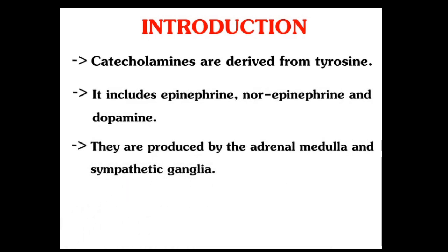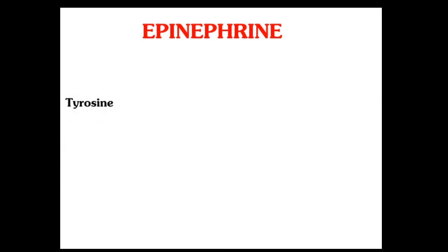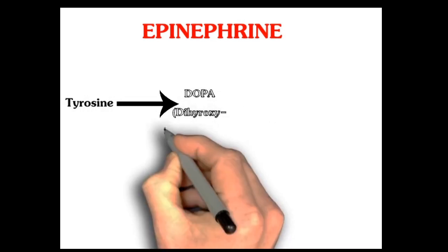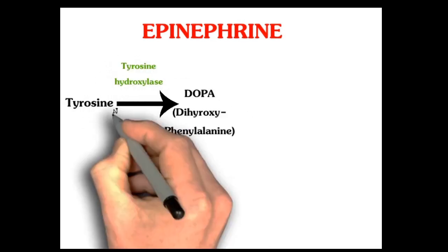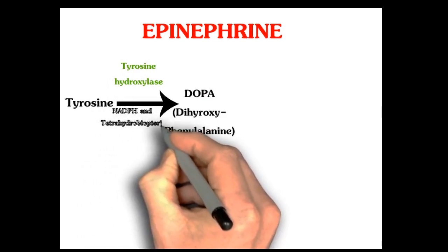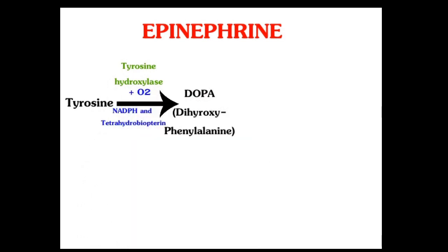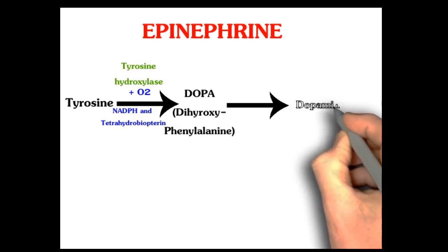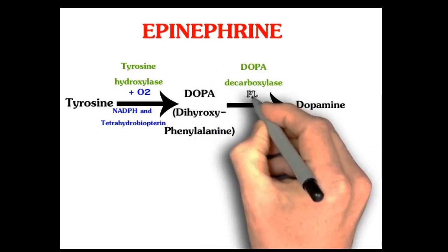Now we'll see the formation of epinephrine. Tyrosine will be converted into DOPA (dihydroxyphenylalanine) by the enzyme tyrosine hydroxylase, which requires NADPH, tetrahydrobiopterin, and one atom of oxygen. Then DOPA will be converted into dopamine by dopa decarboxylase, a pyridoxal phosphate-dependent enzyme.